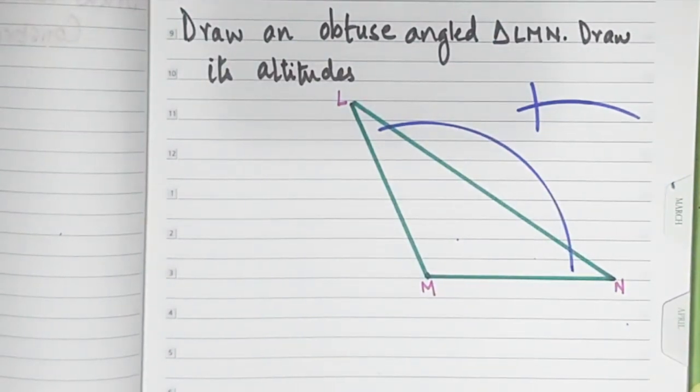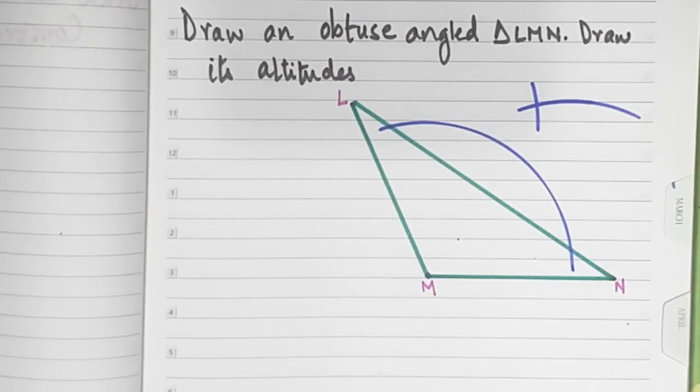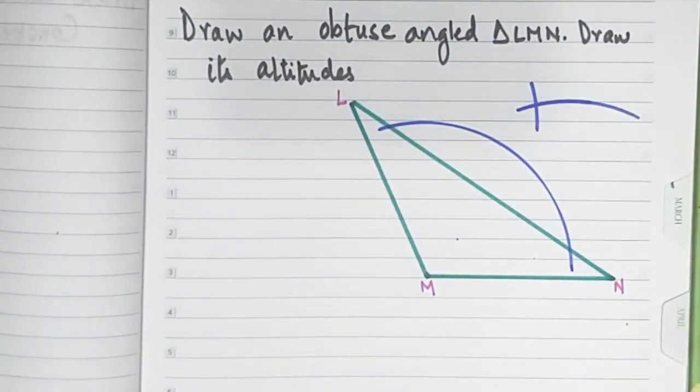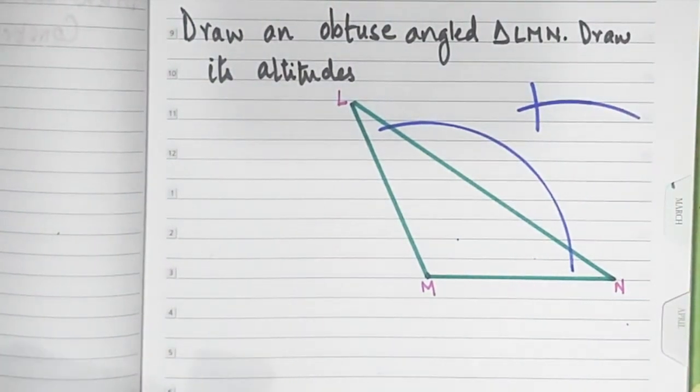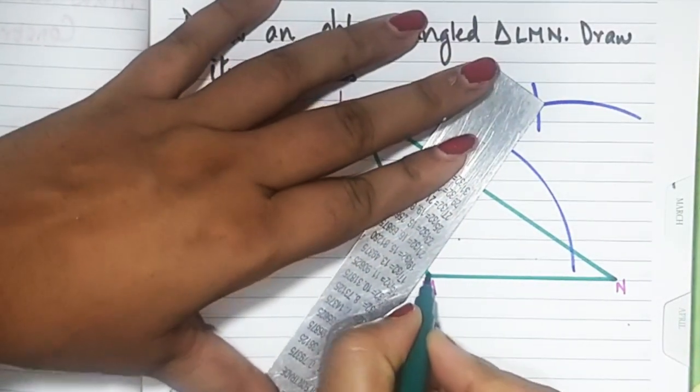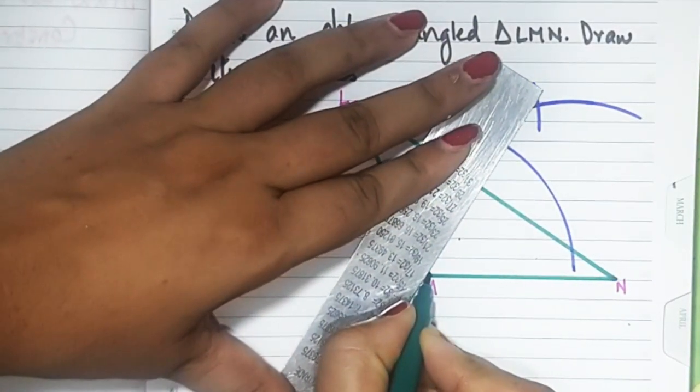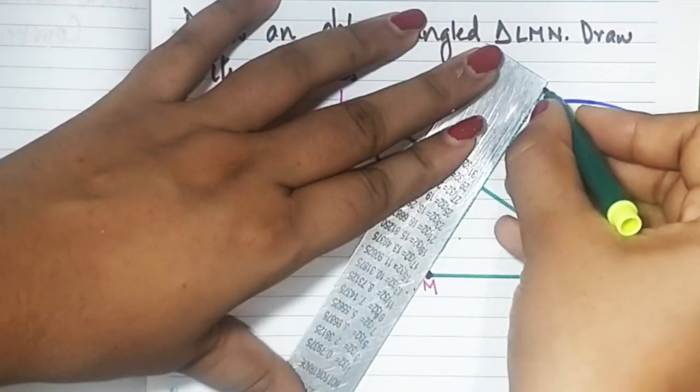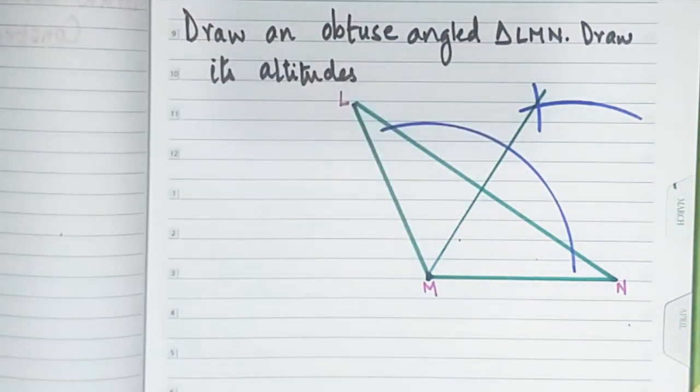Now we have to join point M to this point. Take a scale and join M to this point. Our first altitude is done.